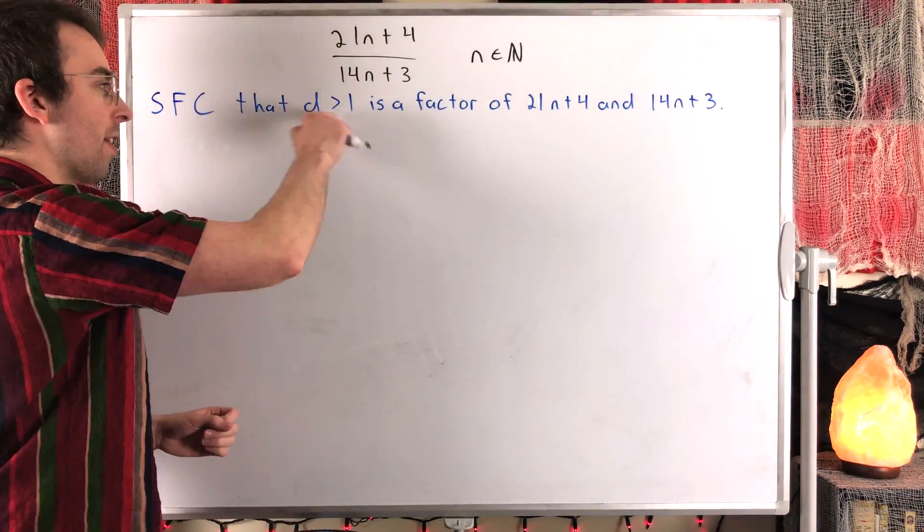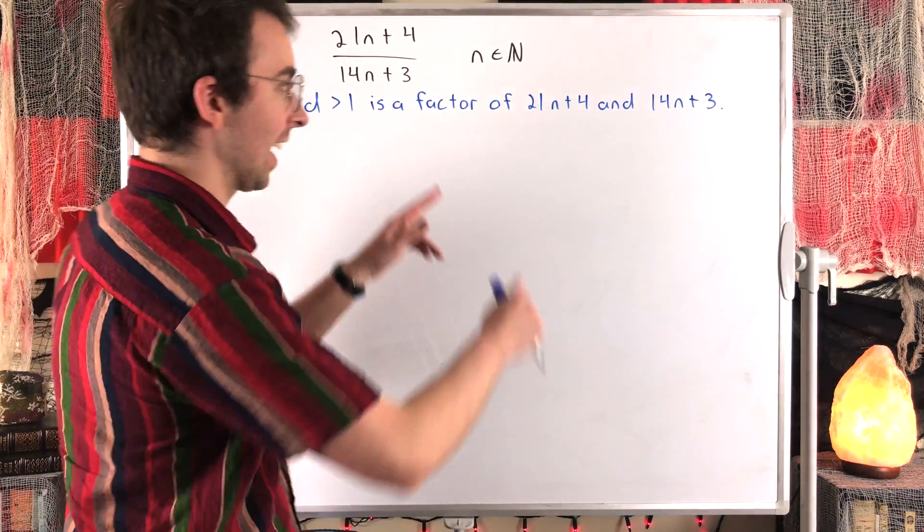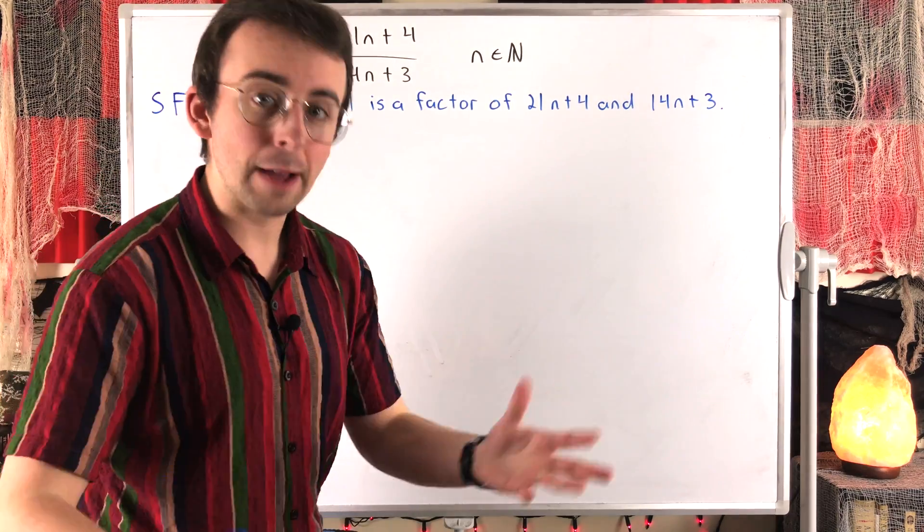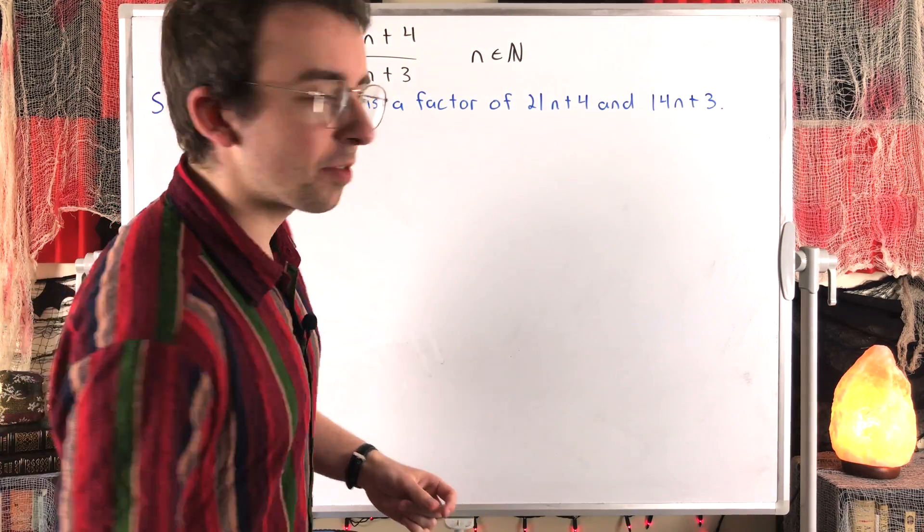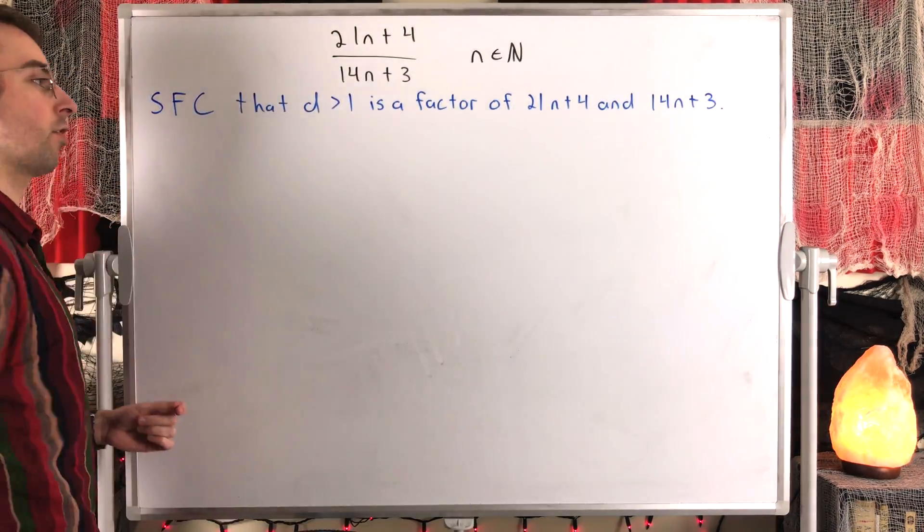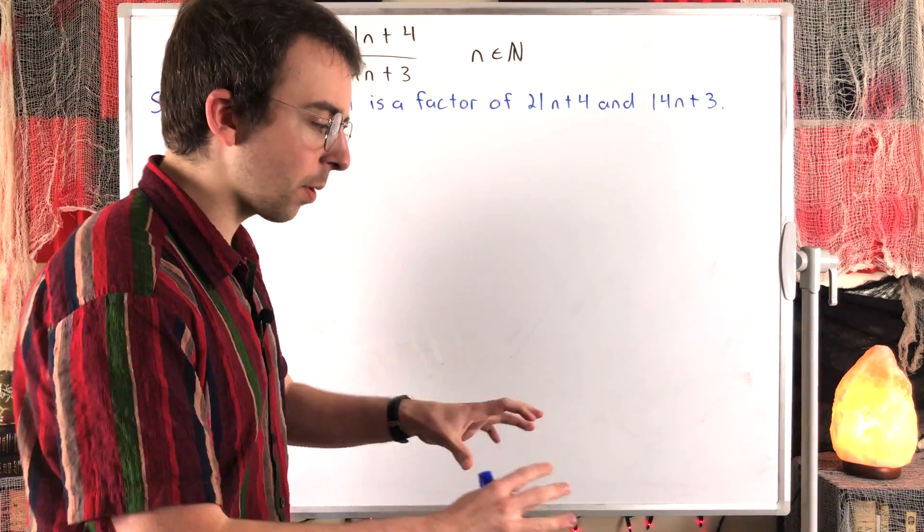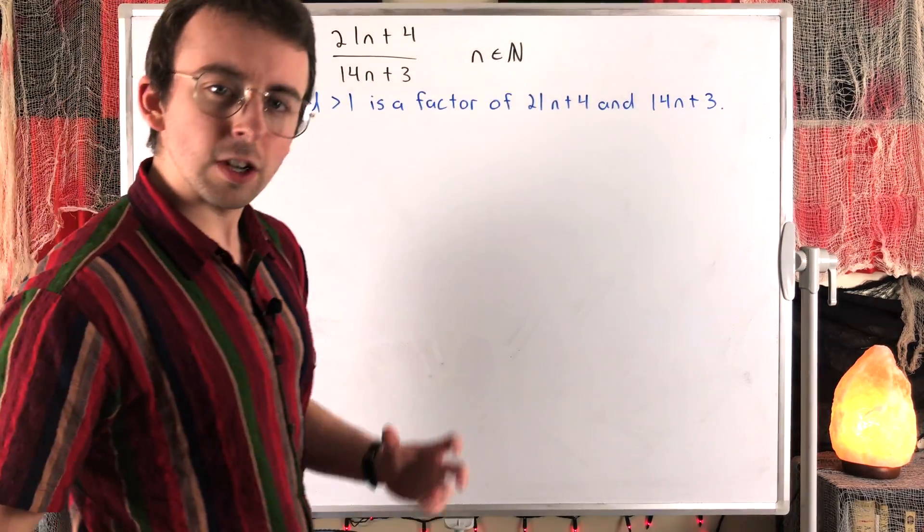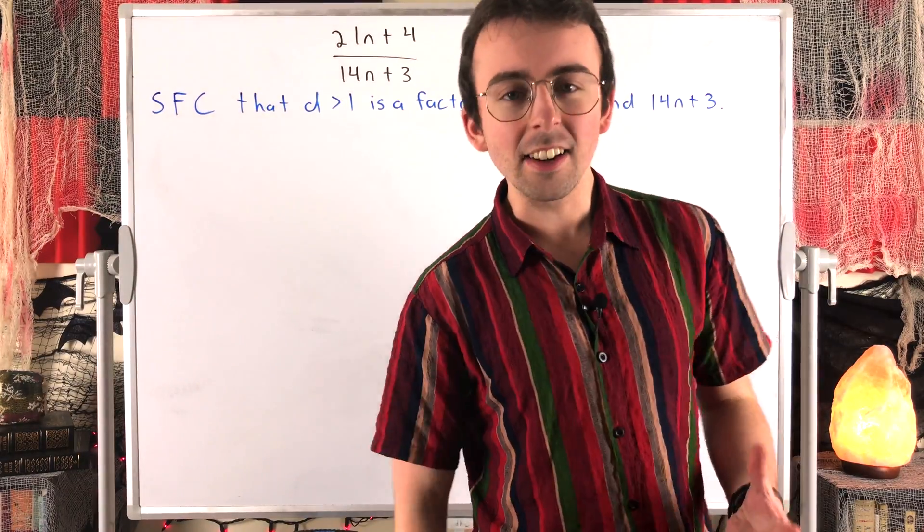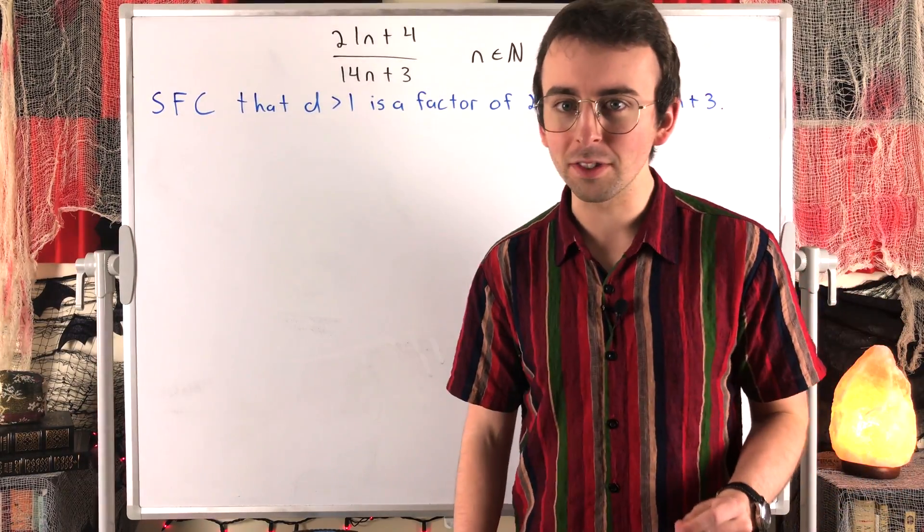So we're supposing there's this common factor greater than 1, and again, since we're calling it a factor, that means it's an integer. When we're talking about factors, we're talking about integers, so D is an integer. Okay, so in order to show that this forces a contradiction, of course, we've got to get to some false mathematical statement.